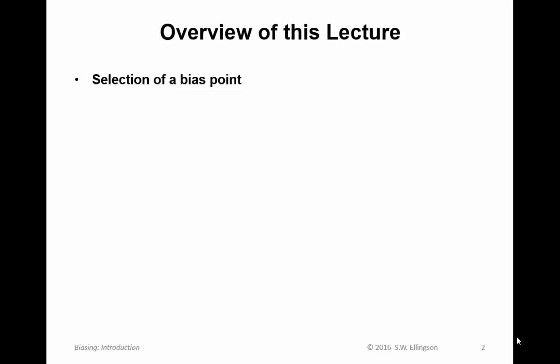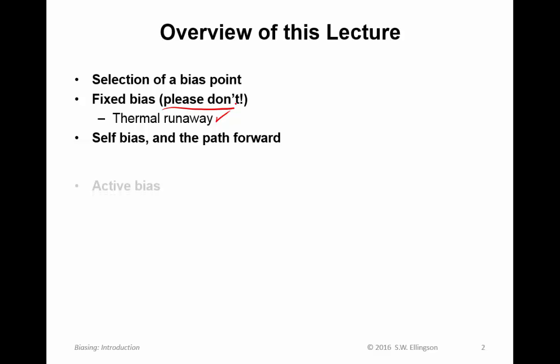Here I will first discuss how to select a bias point. I'll discuss the topic of fixed bias, which is something you should never do, and I'll explain why. The reason in short is this issue of thermal runaway. I'll briefly introduce you to the topic of self-bias, which is one way to address the problem of thermal runaway. Then we'll talk about the path forward and I'll very briefly discuss the topic of active bias.